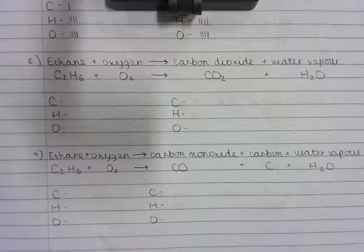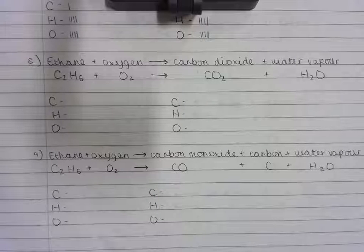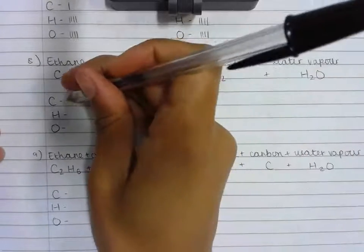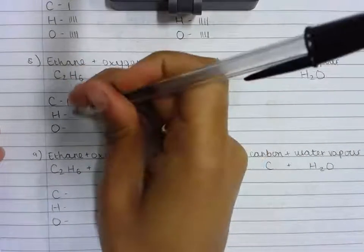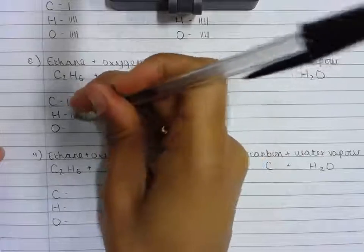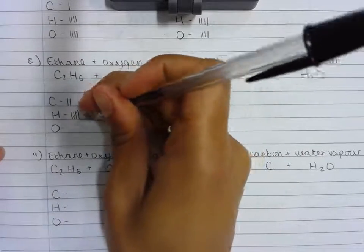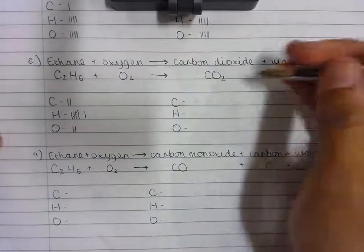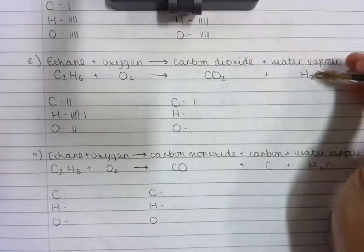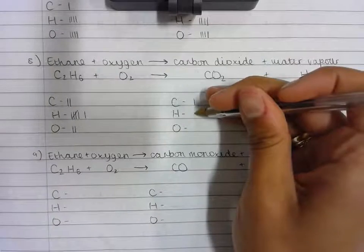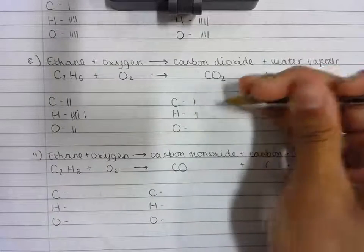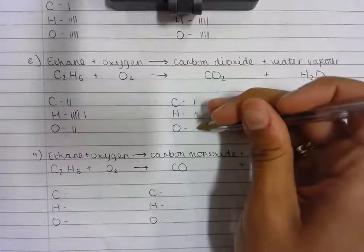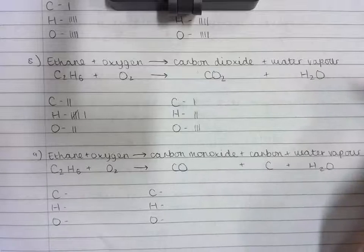I now need to count the number of atoms of each element on the reactant and product side in pen by tallying. So there are two carbon atoms, six hydrogen atoms, and two oxygen atoms on the reactant side, and one carbon atom, two hydrogen atoms, and three oxygen atoms on the product side.